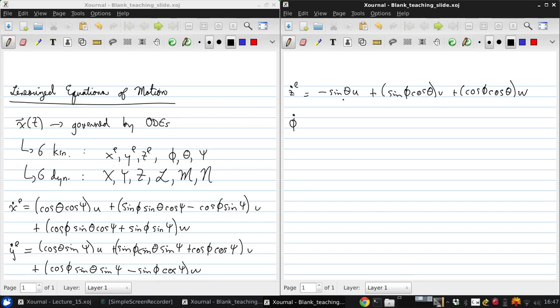For the Euler angles, using our scalar quantization that we developed last time, we can write phi dot as P plus Q sine phi tan theta plus R cosine phi tan theta, and theta dot is Q cosine phi minus R sine phi, and psi dot is Q sine phi over cosine theta plus R cosine phi over cosine theta.